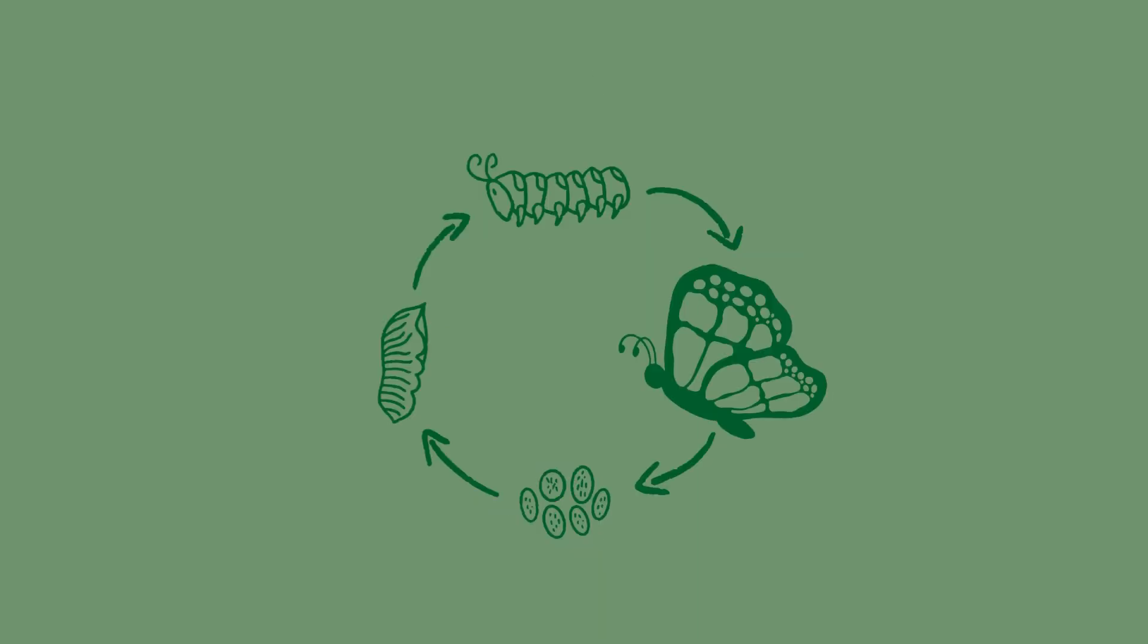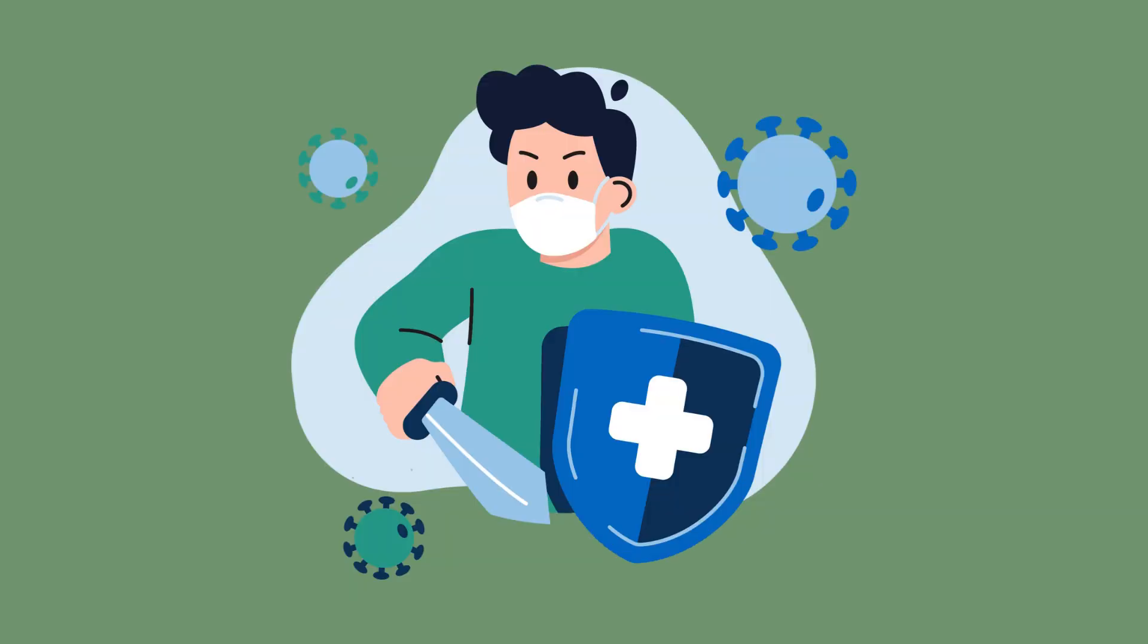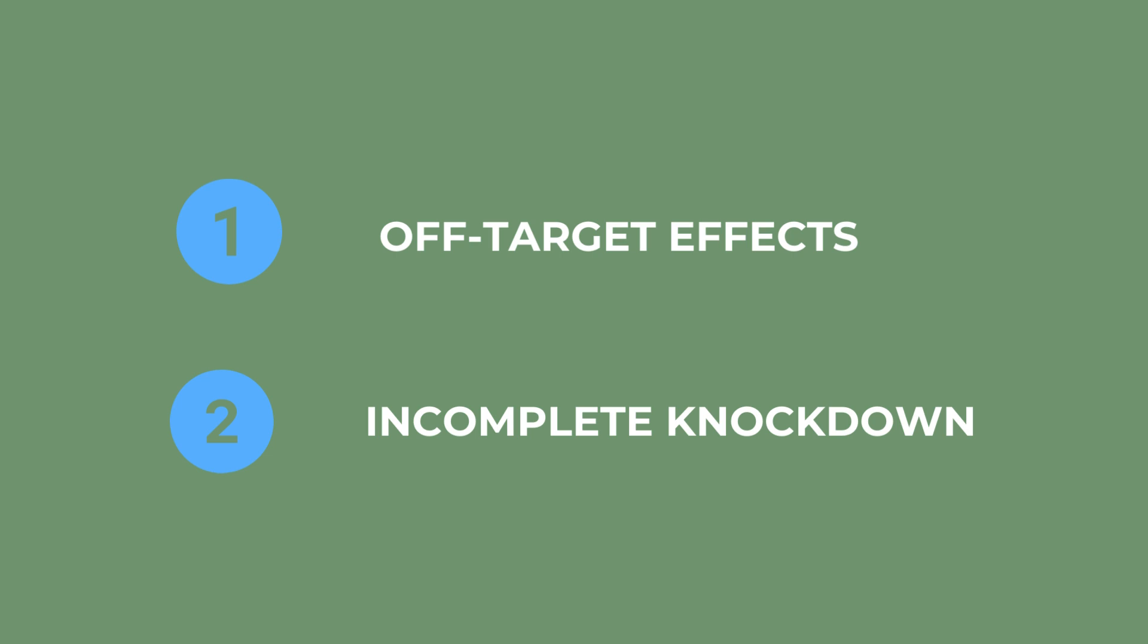Now, this is a biological process that occurs naturally, but it is also utilized to suppress gene expression and fight diseases. However, the artificial process is not always perfect, and sometimes problems can occur. Today, we will be talking about two of them: off-target effects and incomplete knockdown.